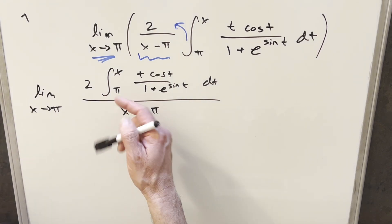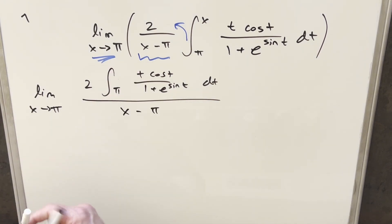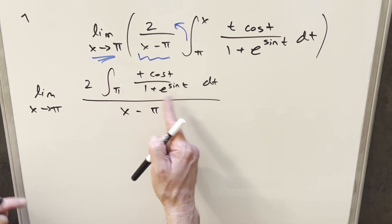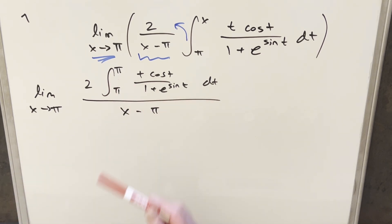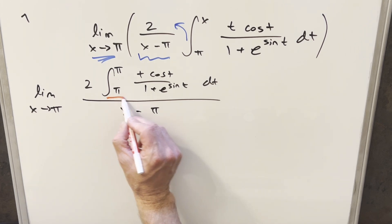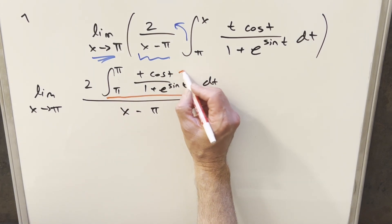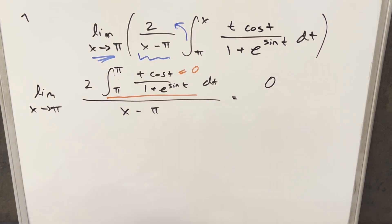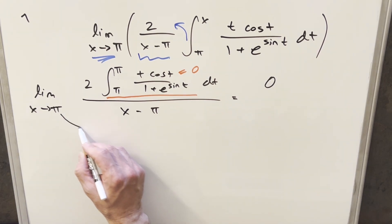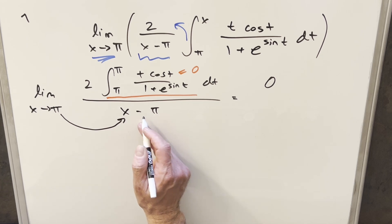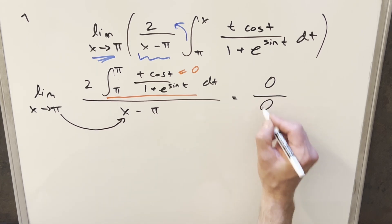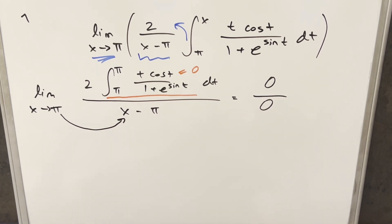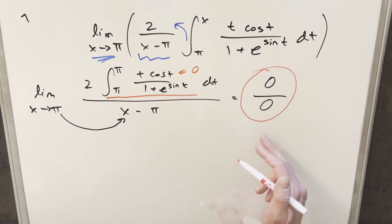From here, we can informally evaluate this limit as x approaches pi. Looking at the numerator — that's our only x value, everything else is t — if we plug in pi for x, the upper and lower bounds of the integral are the same, so the integral equals 0. Then in the denominator, x minus pi also goes to 0 at x equals pi. So we have an indeterminate form, and this is a good case to use L'Hôpital's rule.